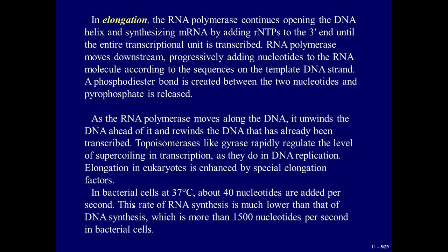Elongation in eukaryotes is enhanced by special elongation factors. In bacterial cells, at 37 degrees Celsius, about 40 nucleotides are added per second. This rate of RNA synthesis is much lower than that of DNA synthesis, which is more than 1500 nucleotides per second in bacterial cells.